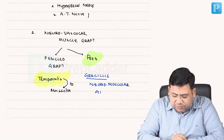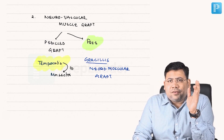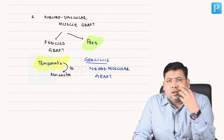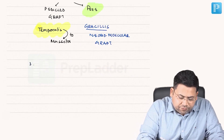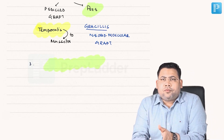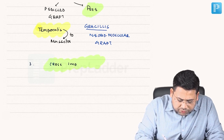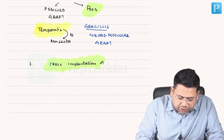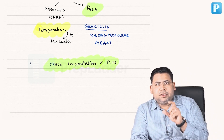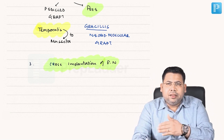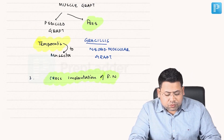One more strategy used in dynamic repair is cross facial implantation of the facial nerve. On the affected side where the nerve has been destroyed, we use the less dominant or less useful branches. We utilize the normal contralateral side facial nerve and bring sensation from the opposite side to the affected side, restoring sensation to the desired area.